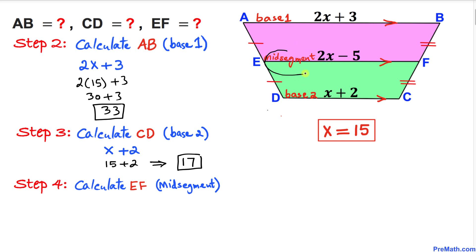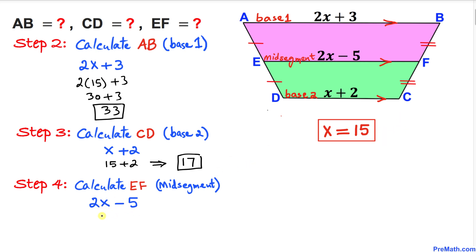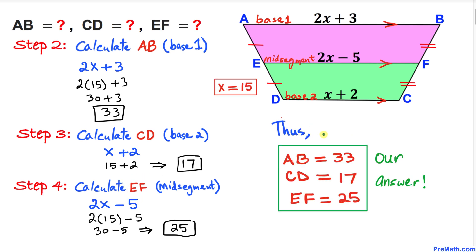Here's our final step — let's calculate the mid segment EF. Substituting x = 15 into 2x − 5: 2 × 15 − 5 = 30 − 5 = 25. So EF = 25. Thus AB = 33, CD = 17, and EF = 25.